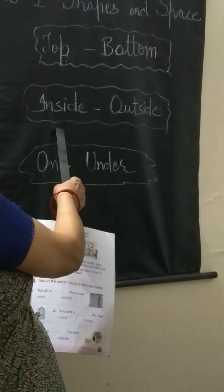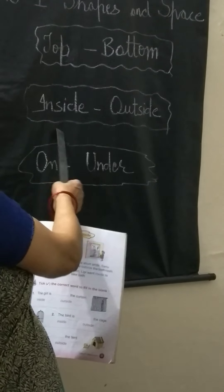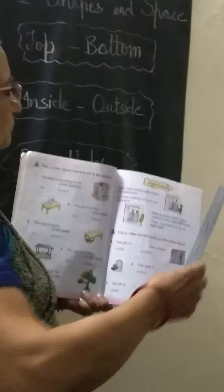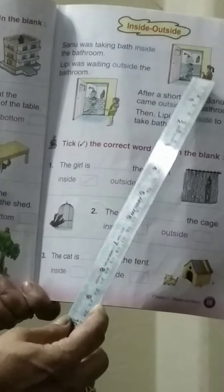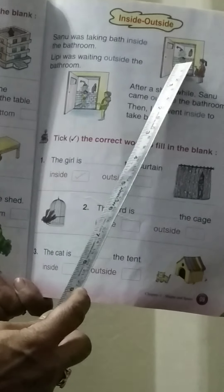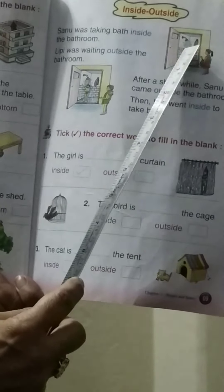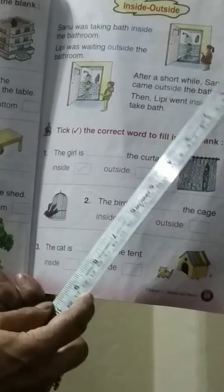Now the next topic is inside and outside. Inside maane antha, outside means bahar. Now in the picture, you see the boy — Sanu is taking bath inside, antha meho. And the girl is standing outside. So this is inside, this is outside.